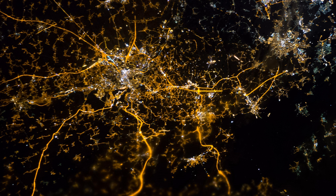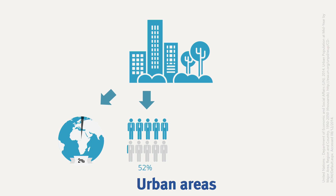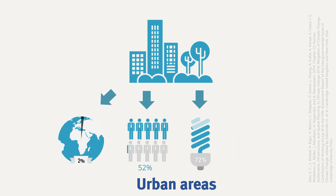A great share of material extraction and its associated effects goes to building and running cities — we use more materials to build and fuel cities than to feed humans. To put this into perspective, cities occupy only 2 percent of global land area and host more than 50 percent of global population, but they are responsible for three quarters of global energy use and pollution emissions. This means cities are both the main actors responsible for our environmental impacts and the key actors to combat climate change.